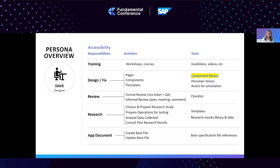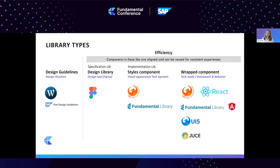So what types of libraries are we talking about? I've done a mapping of guidelines and specifications that we could consider libraries as well. If we come from the beginning of the whole process, we started with design guidelines, and at SAP we have a design direction — a documentation that lives on a web page, on a content management system.